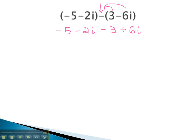And then from here, we can again combine like terms. Negative 5 and negative 3 is negative 8. And the i's, negative 2i plus 6i, is positive 4i.